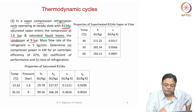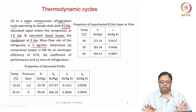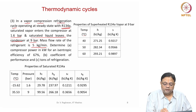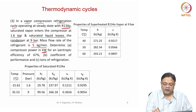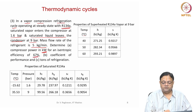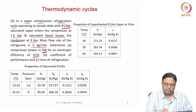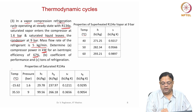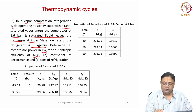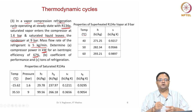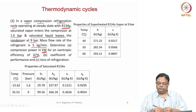Mass flow rate of the refrigerant is 5 kilogram per minute. These are the given information. Determine: the compressor power in kilowatts if the isentropic efficiency is 67 percent, second the coefficient of performance COP, and third the refrigerant capacity in tons of refrigeration.